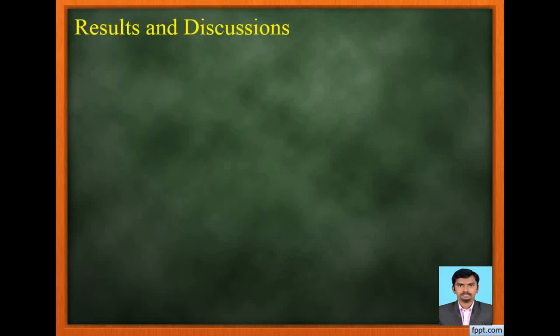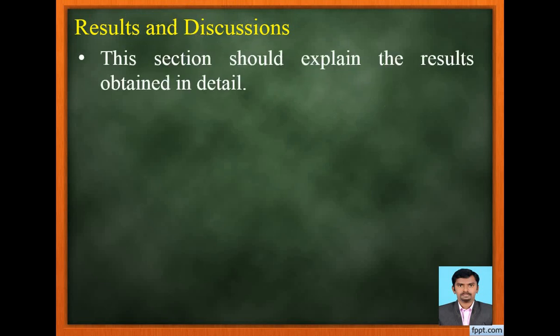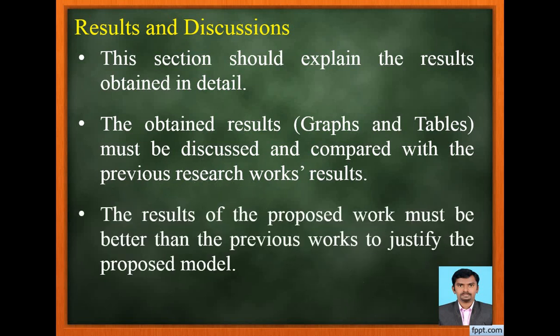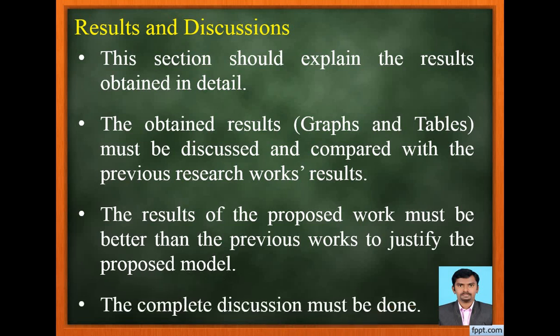Now let us see results and discussions. This section should explain the results obtained in detail. The obtained results must be discussed and compared with the previous research work's results. The results can be presented either in graphs, diagrams, or tables. The results of the proposed work must be better than the previous works to justify the proposed model, and the complete discussion must be done in this section.